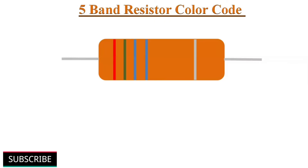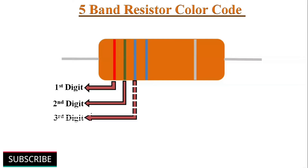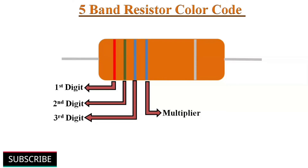Now let's discuss how to find the resistance value of a 5-band resistor. A 5-band color code resistor has 4 colors on the left side, very close to each other, and the fifth color band on the right side separated with some space. The first 3 color bands indicate 3 digits, making up a 3-digit number. The fourth color band represents the multiplying factor, and the fifth color band indicates the resistor's tolerance.